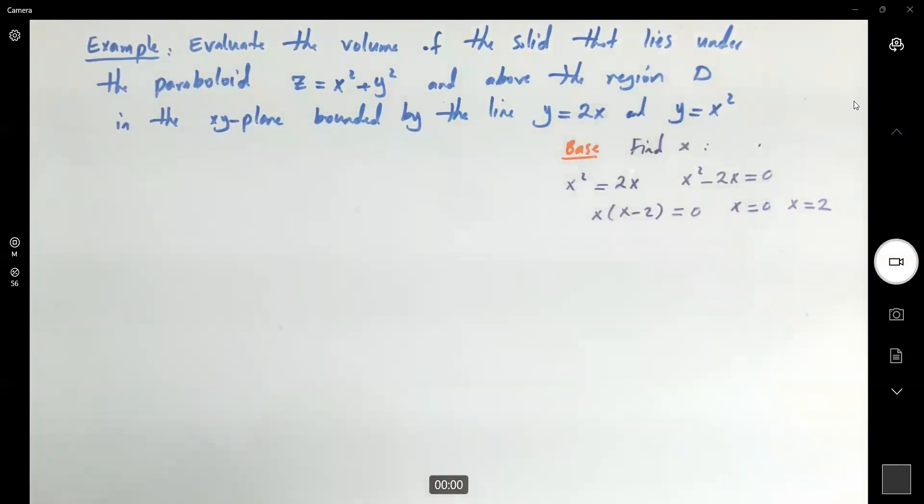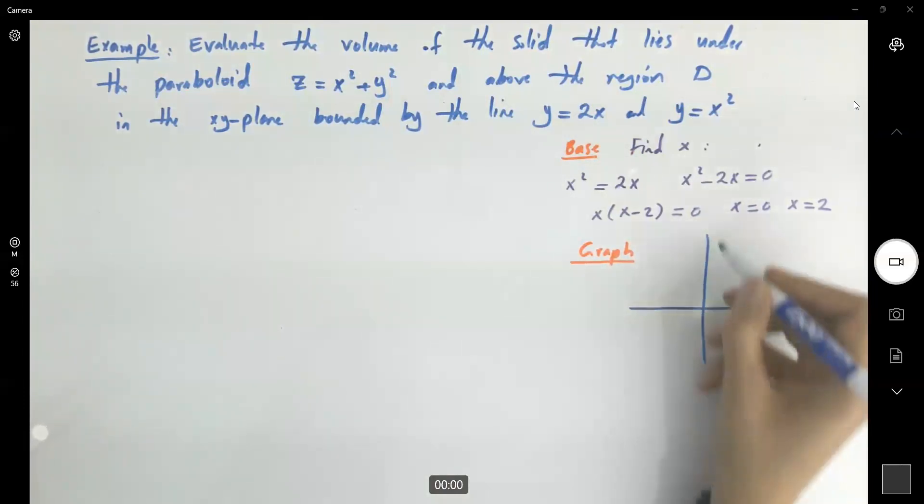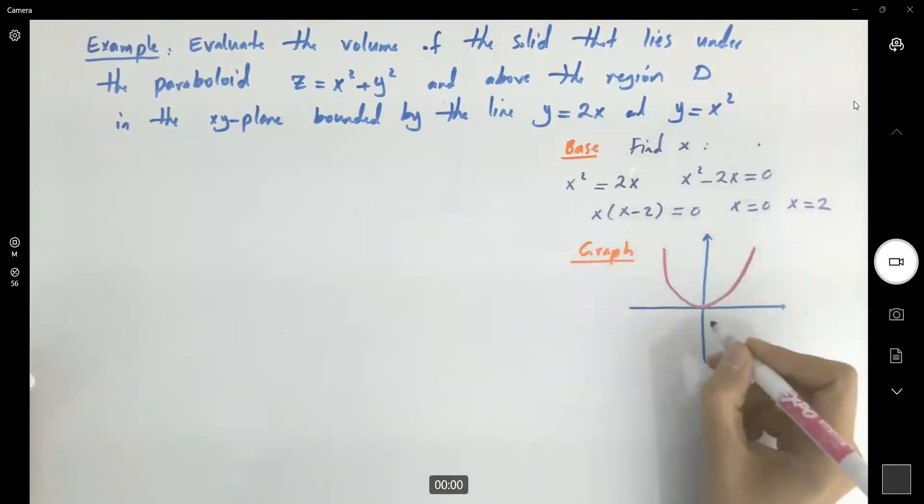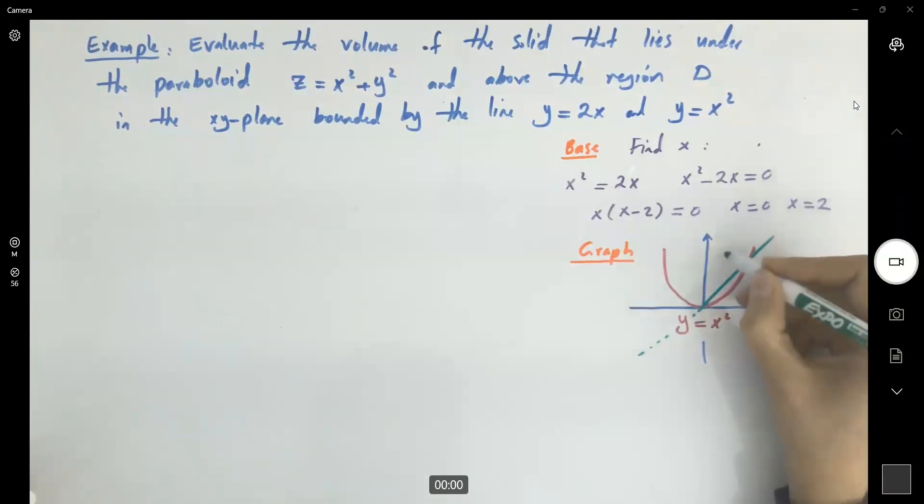But to make sure you have the correct lower bound and upper bound, graph it. What's the graph like? You have the line 2x and you have your parabola x squared. Your parabola x squared is going to be right here, y equals x squared, and your line y equals 2x just going to pass through here.